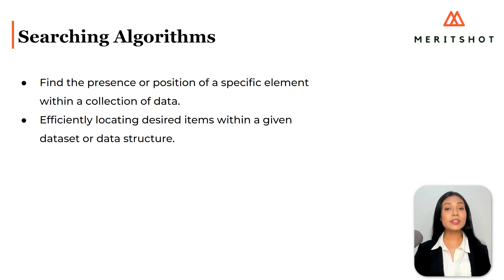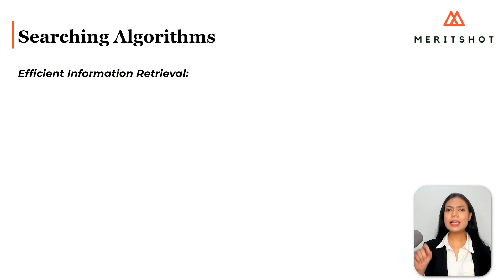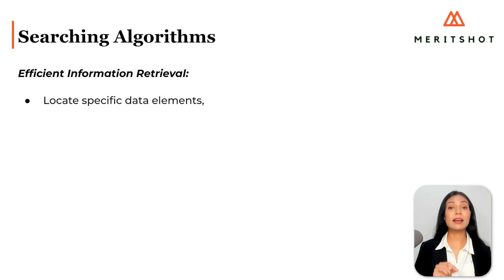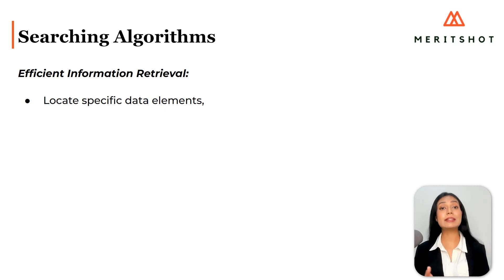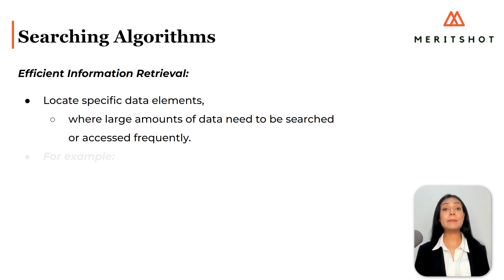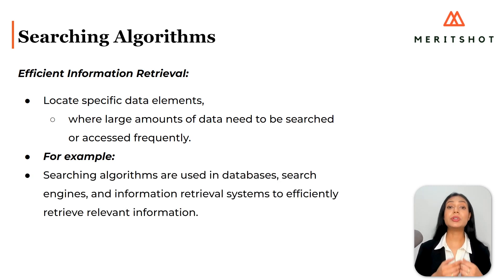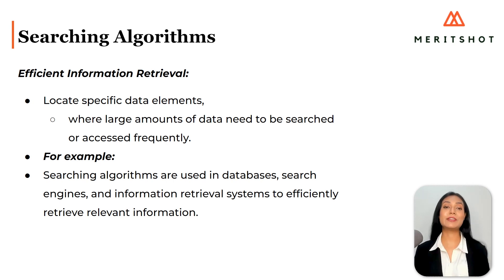1. Efficient information retrieval. Searching algorithms allow us to quickly locate specific data elements, which is crucial in scenarios where large amounts of data need to be searched or accessed frequently. For example, searching algorithms are used in databases, search engines, and information retrieval systems to efficiently retrieve relevant information.